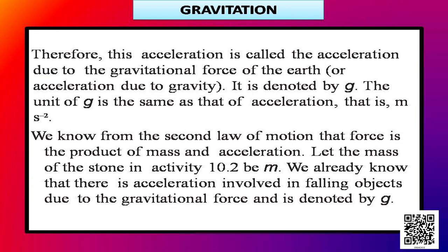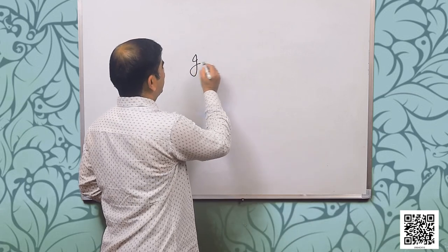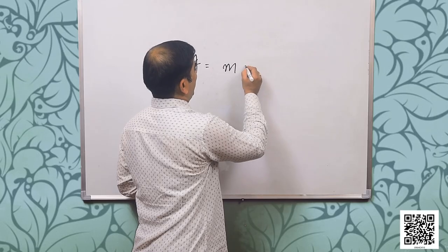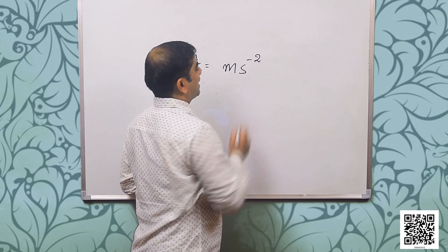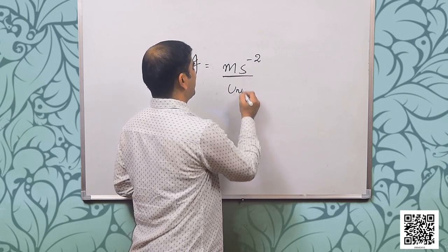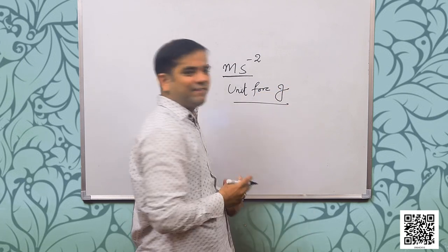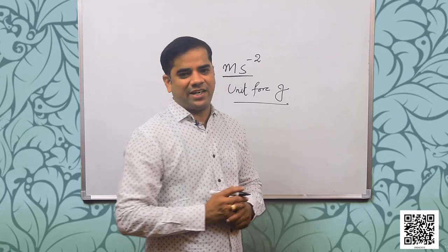This acceleration is called the acceleration due to the gravitational force of the earth, or acceleration due to gravity. It is denoted by g. The unit of g is the same as that of acceleration, that is m/s².